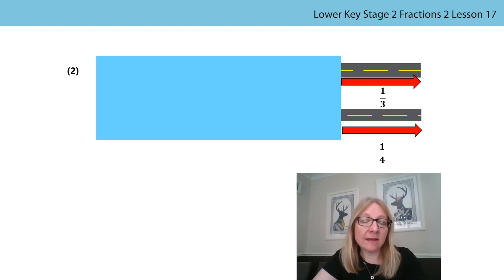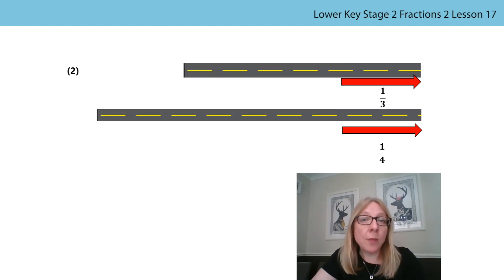In the second example, we were comparing the length of two journeys. Again, the length of each part is the same, but that part represents a third of the top journey and a quarter of the bottom journey. And so you need to draw three equal parts on the top line and four equal parts on the bottom line, like this. The bottom journey is longer in length.